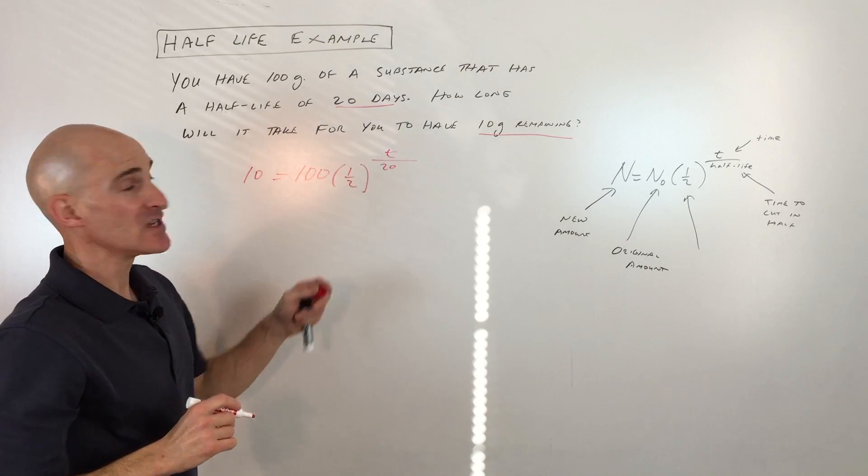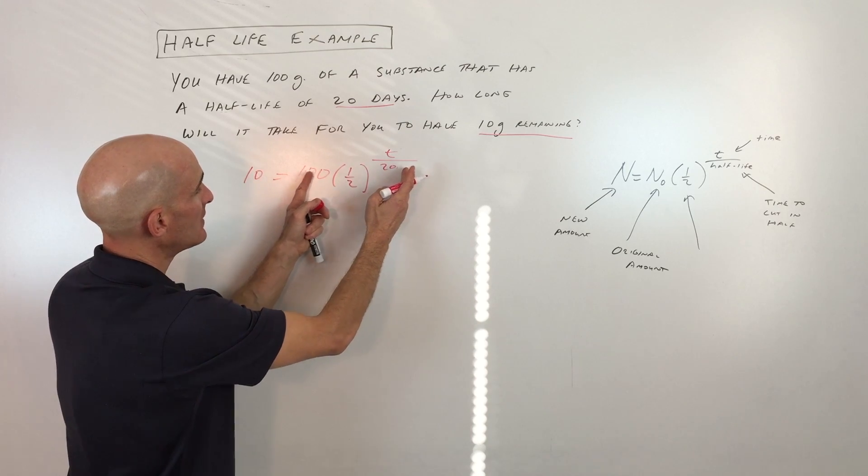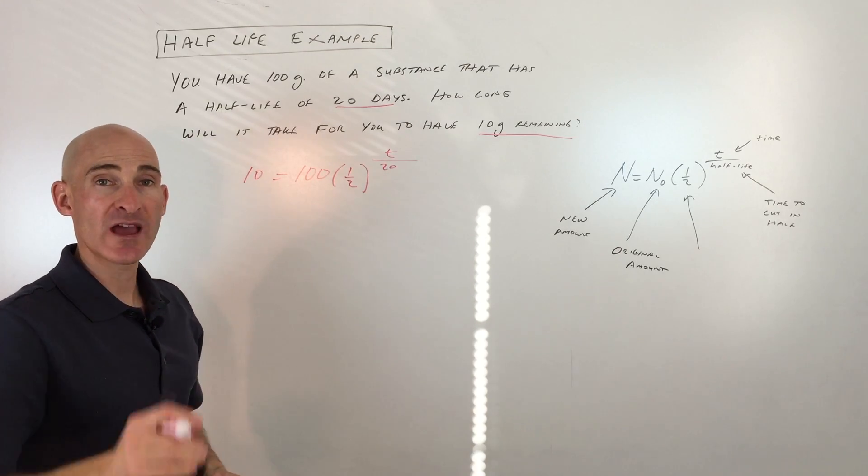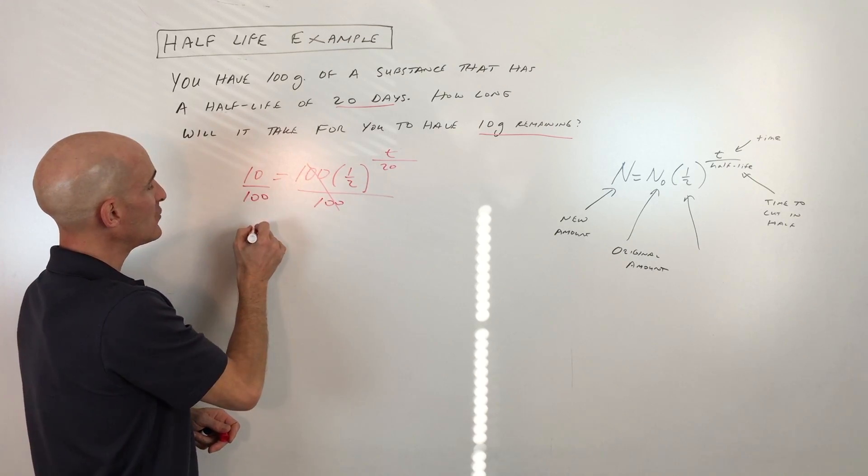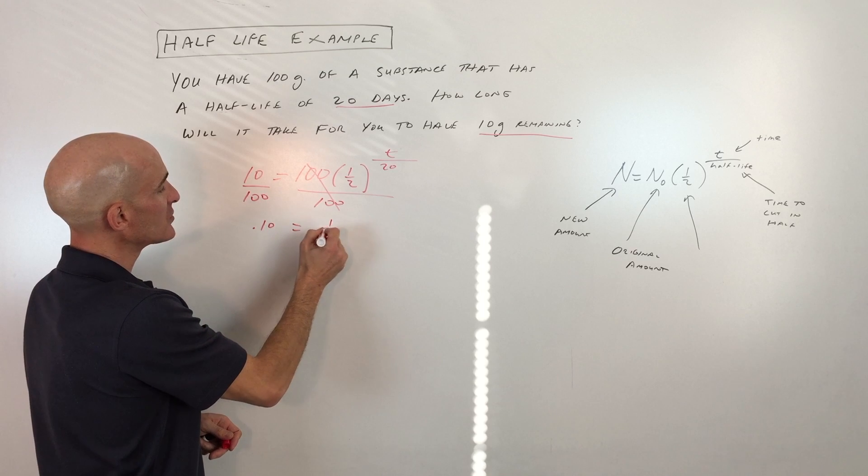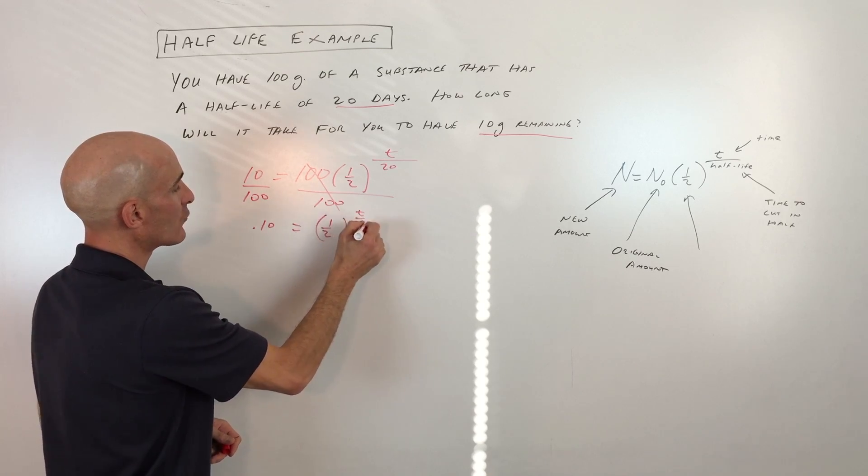So we're trying to solve for t. What we're going to do is work from the outside in towards the t by doing the opposite operation. So first thing we're going to do is divide both sides by 100. And if we do that, we get 0.10 equals one-half to the t over 20.